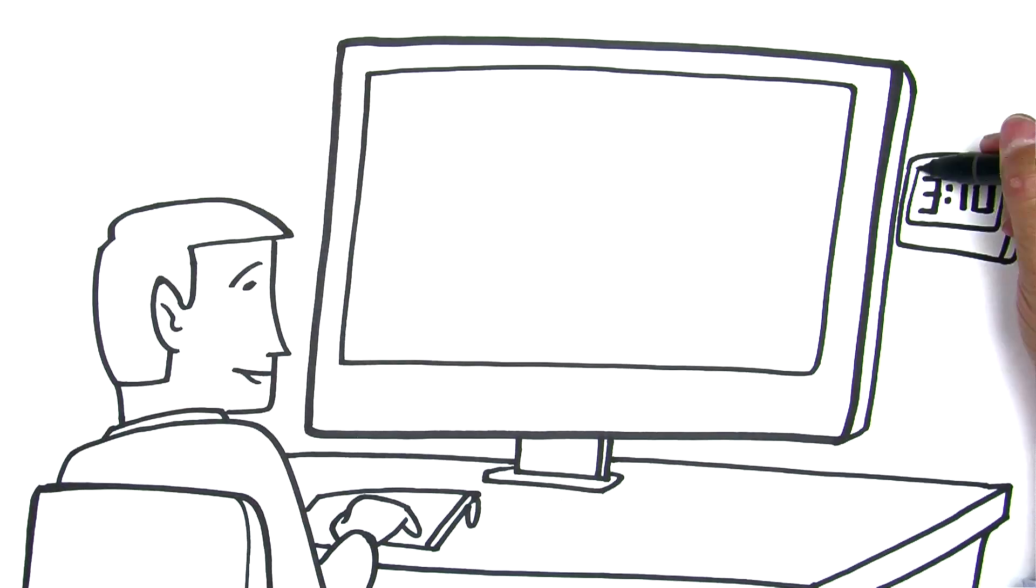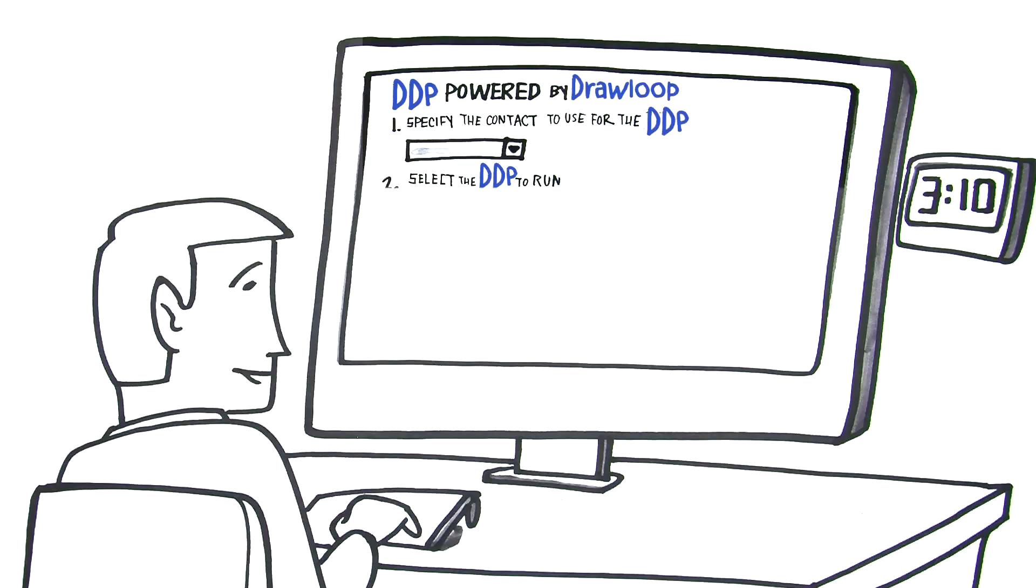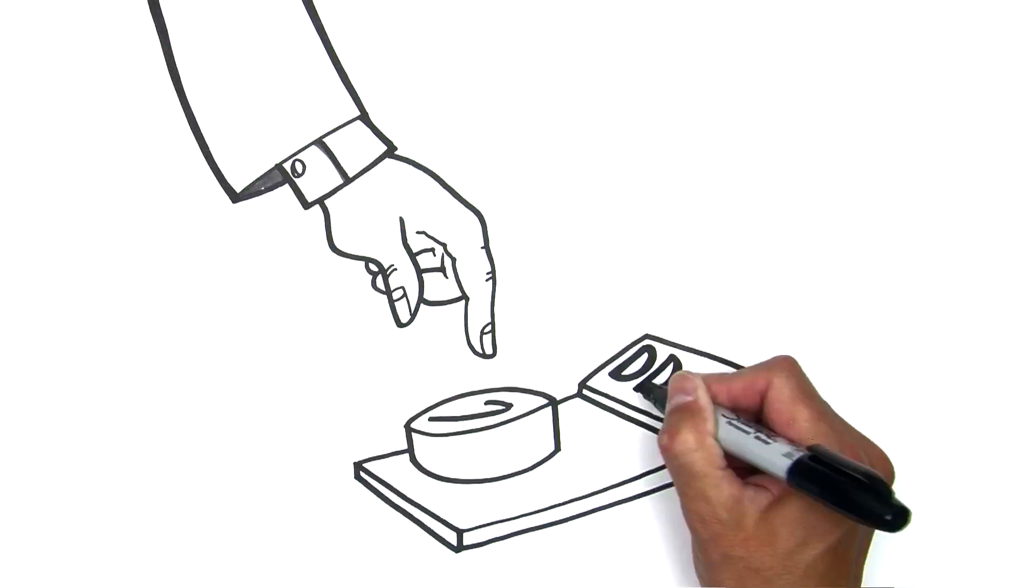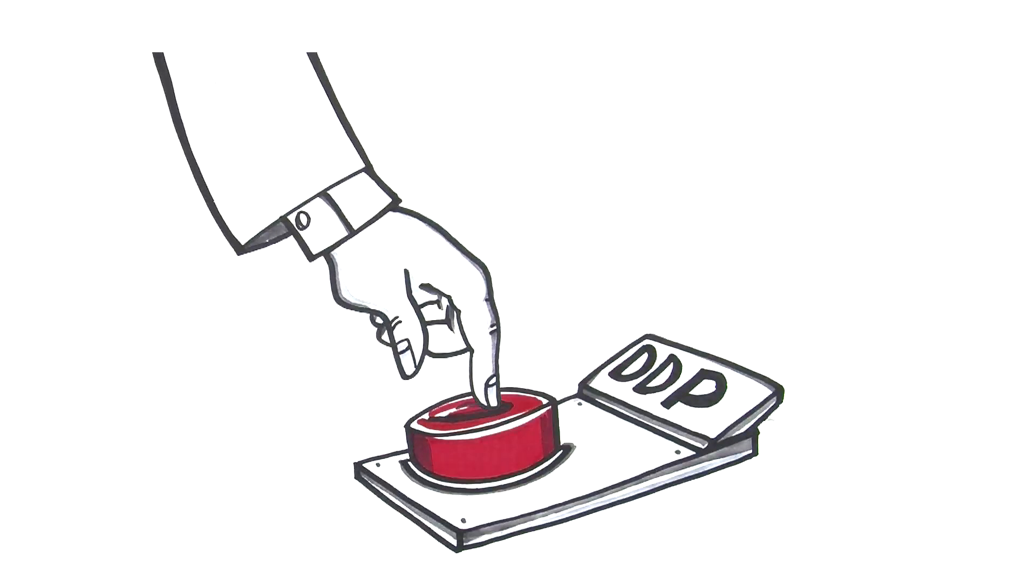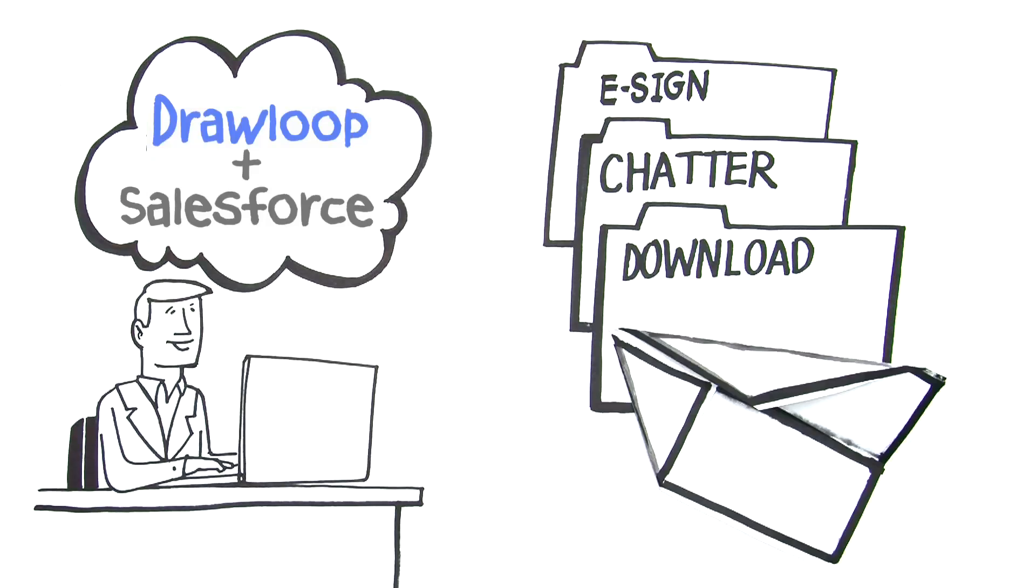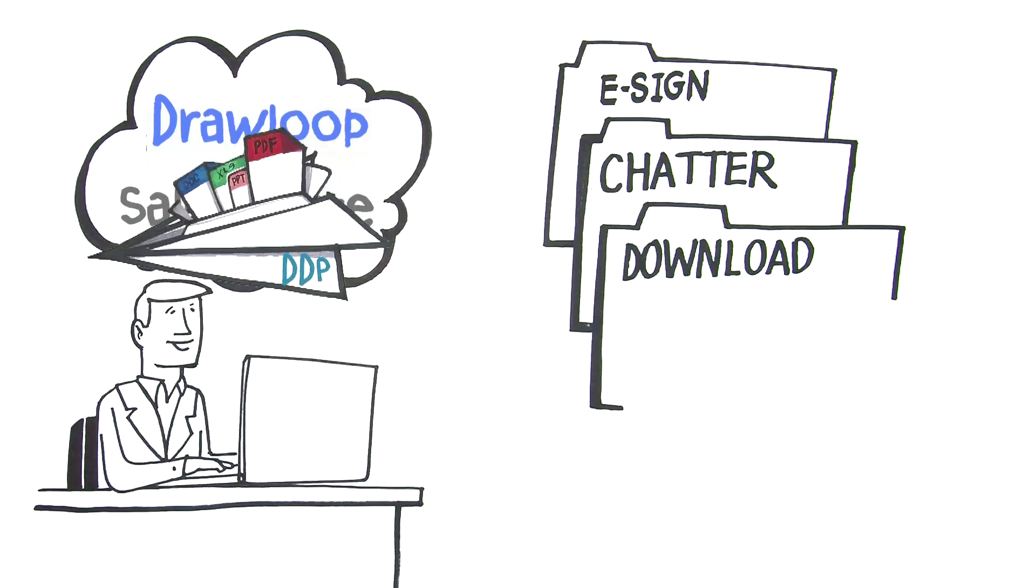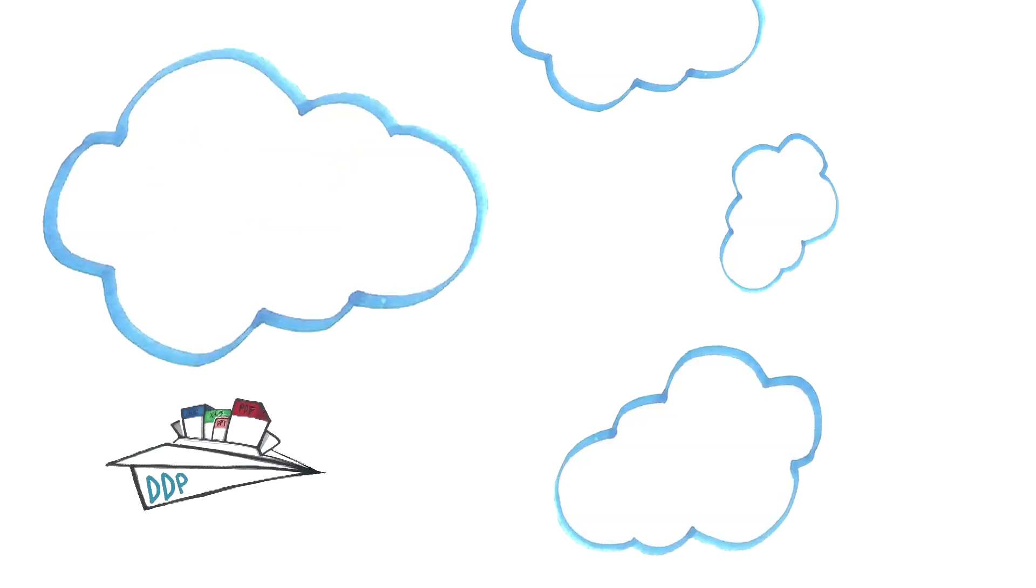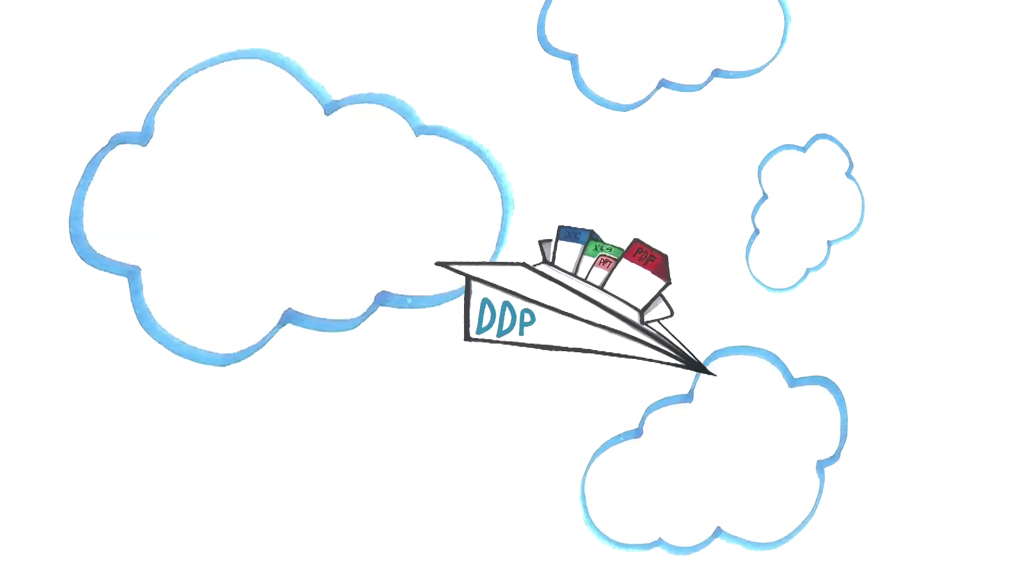Here's how Drawloop works. You keep all your data in Salesforce and use all the same documents you've been using for years. That's a lot of documents. It's just that now all you need to do is push a button. Drawloop dynamically pulls your data from Salesforce and merges it with your documents to create a dynamic document package, or what we call a DDP.